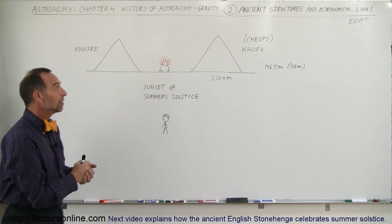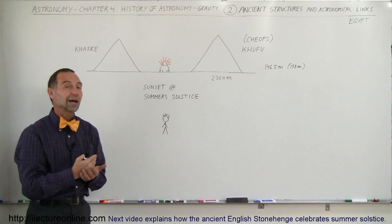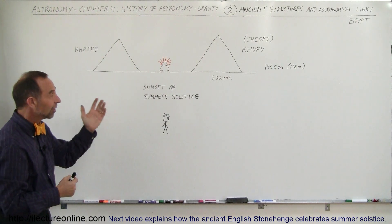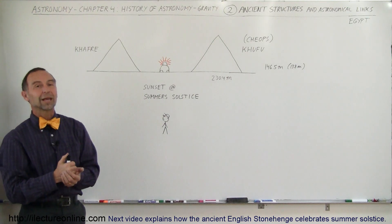So there you go. Some amazing structures built a very long time ago, along the lines of where the summer solstice and the winter solstice happened, in this case, the summer solstice in Egypt at the pyramids.